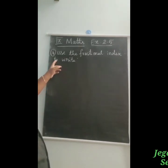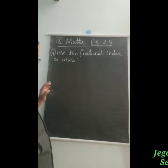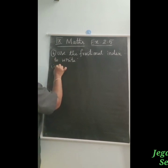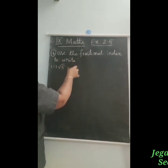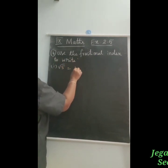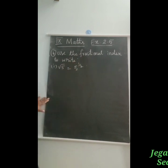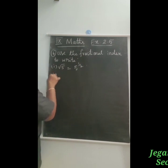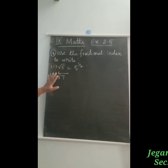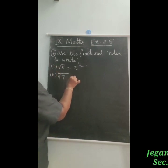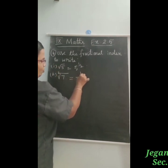The 4th question says: use the fractional index to write. The first part is root 5 — written as a fractional index means 5 power 1 by 2. The next one is square root of 7. Whether written as root 7 or square root of 7, both mean the same thing. So square root of 7 is equal to 7 power 1 by 2.